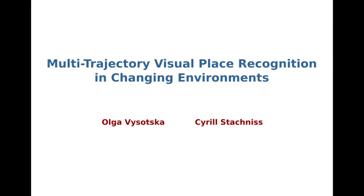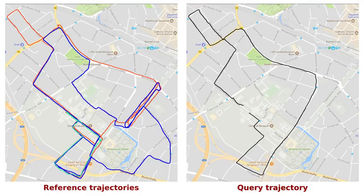In this video we show the performance of our system for visual place recognition in changing environments that localizes the robot within multiple reference trajectories.